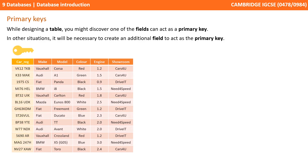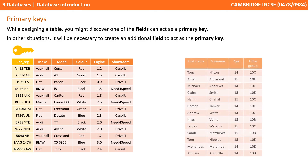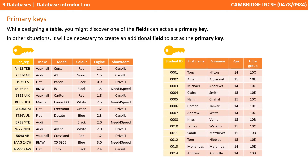As you design a table, you might discover one of the fields can naturally act as a primary key. The table on the left has details about cars, and the car registration field can ideally act as a primary key, as no two cars have the same registration number. In many other situations, it will be necessary to create an additional field to act as the primary key. With the table on the right, none of the fields originally present could be guaranteed to be unique, so we have created the field student ID.